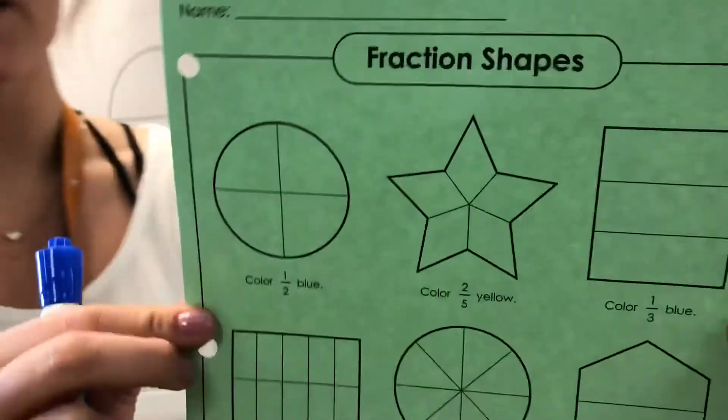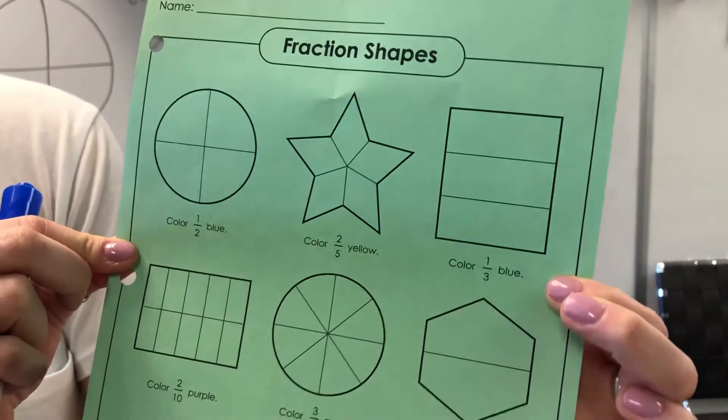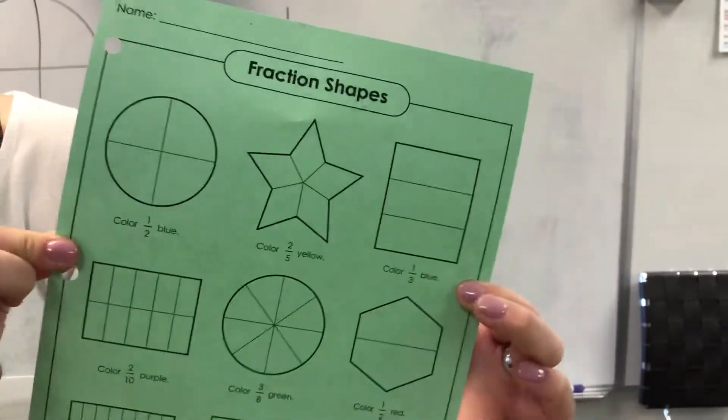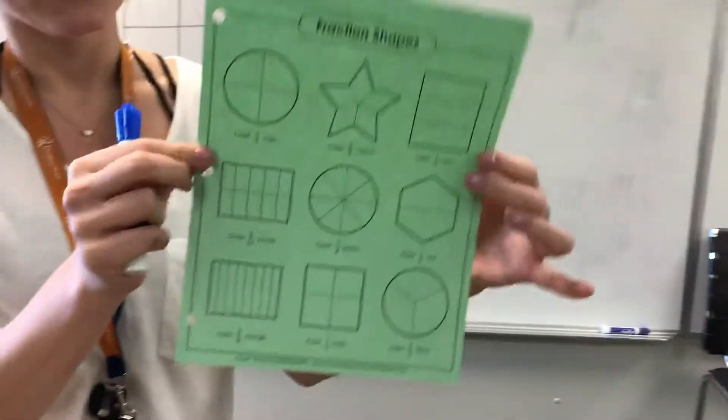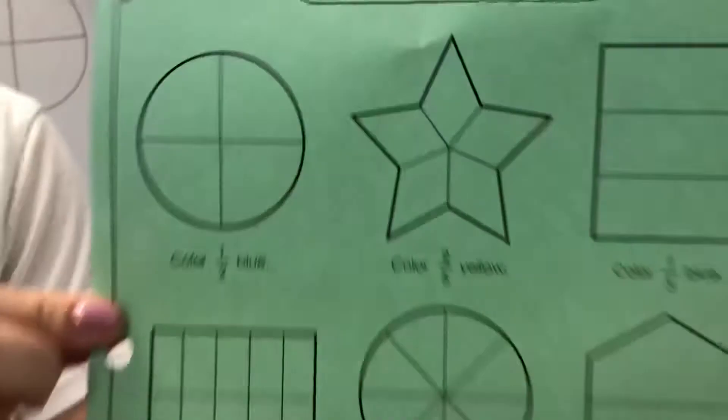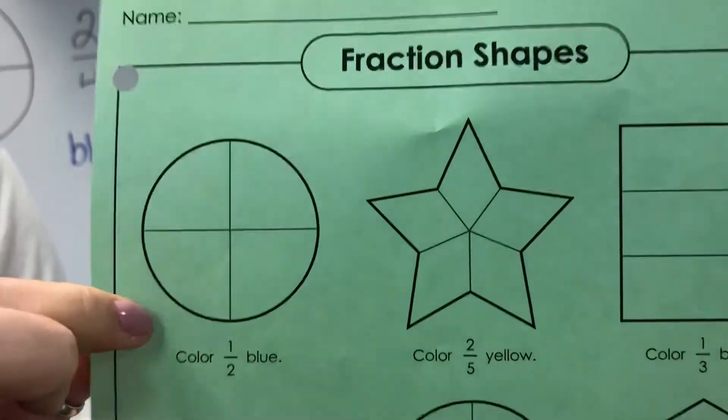So basically in this worksheet, we're going to color the parts of the fraction that they're asking us to color in the shape. I'm going to show you the first one. It's a little bit different than what the paper says. The other ones are very straightforward, so we're just going to change this first one.